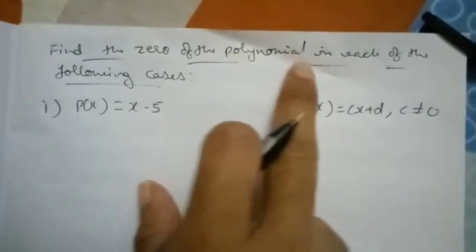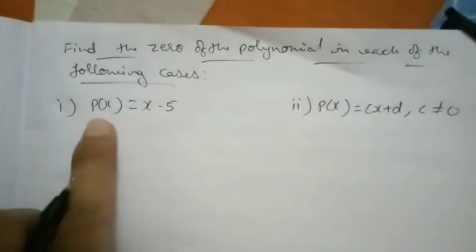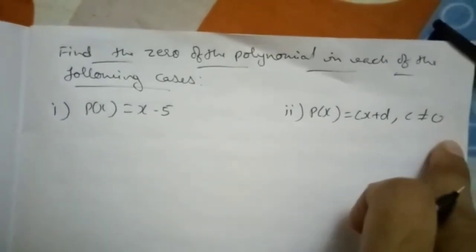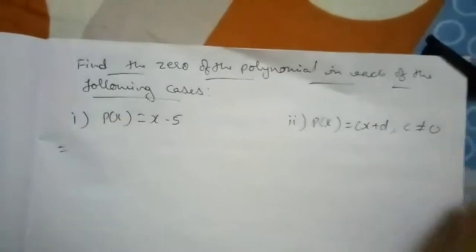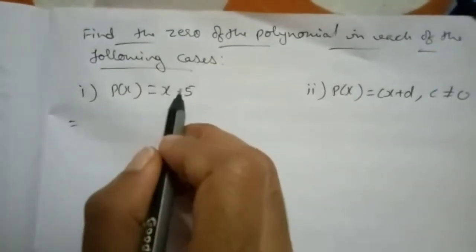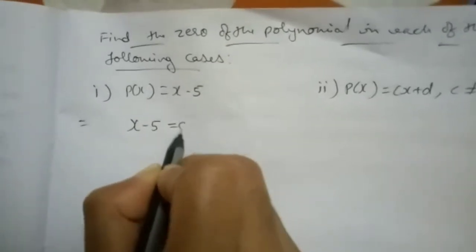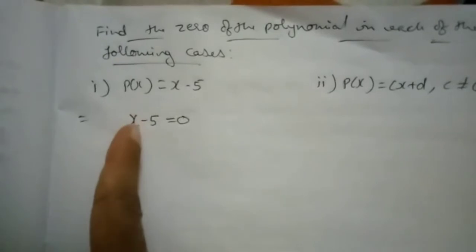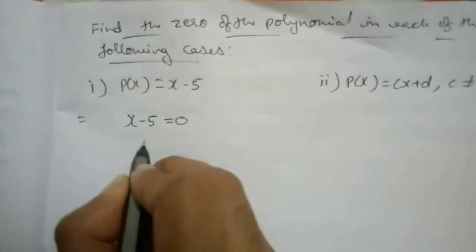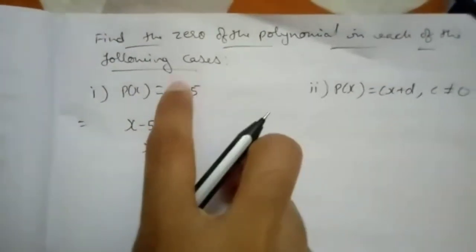Next question: find the zero of the polynomial in each of the following cases. First question is p(x) equals x minus 5. When they ask you to find the zero of the polynomial, you have to equate it to zero. Then keep only x on the left-hand side and take everything to the right-hand side. So minus 5 taken to the other side gives plus 5, so x equals 5. This is the zero of this polynomial.